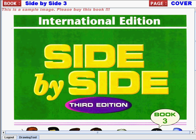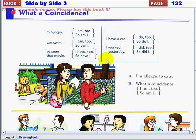It's from page 132, What a Coincidence! Okay, let's do the sentences. I'm hungry, I am too, or so am I. I can swim, I can too, so can I. I've seen that movie, I have too, so have I. I have a car, I do too, or so do I. I worked yesterday, I did too, so did I.